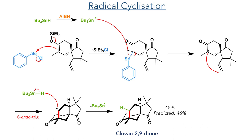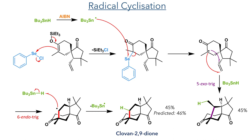This generated clovane-2,9-dione with a 45% yield, which is almost identical to the yield predicted by the neural network model of 46%. In addition, the product formed by the more kinetically favoured 5-exotrig cyclisation was also produced in a 45% yield.